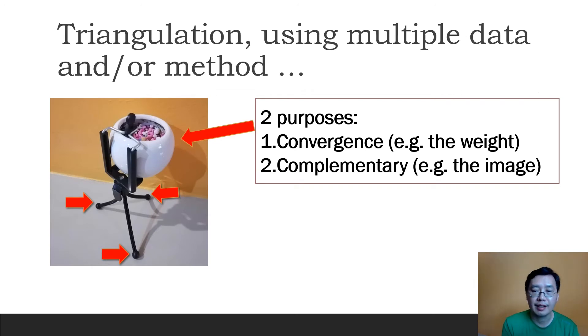Consider this case, using multiple data or method. The common sense is that if you're using multiple data, you are using multiple methods. So there are two main purposes you have to consider. Are you looking at the convergence of the findings, or are you using multiple methods or data as complementary? Like in this case, I want to look at this pot, this lovely pot here.